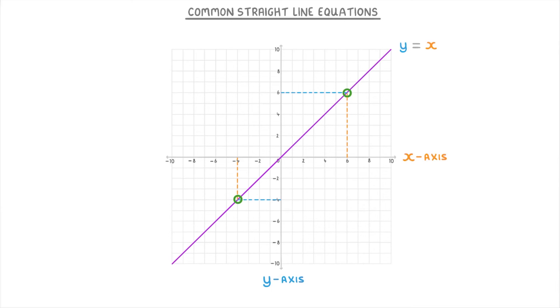Now if the diagonal line was instead going the opposite way, the equation becomes y equals minus x. Because if y is a positive number, like up here, where it's a positive 8, the x will be the negative version of that number. So negative 8.